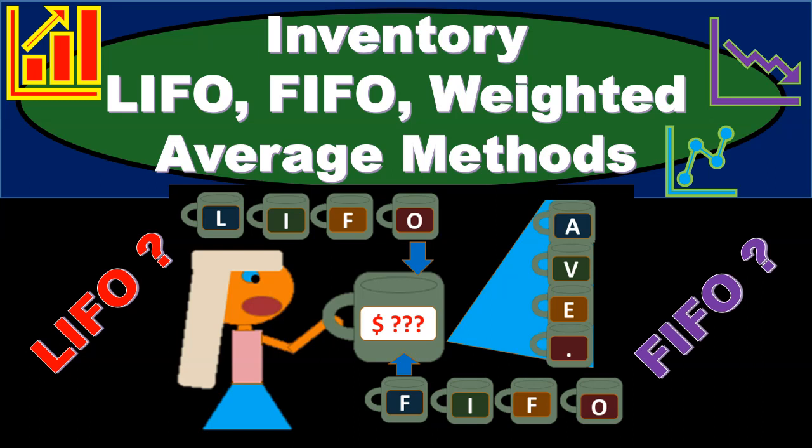In this presentation we will discuss inventory cost flow methods including first in first out, last in first out, otherwise known as FIFO and LIFO, and the weighted average method as well as specific identification.